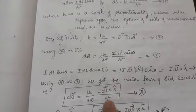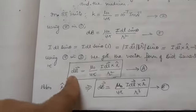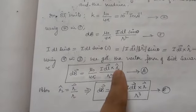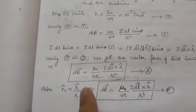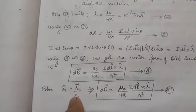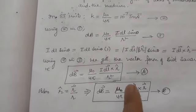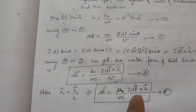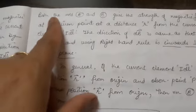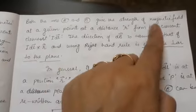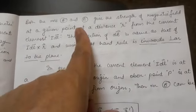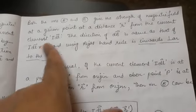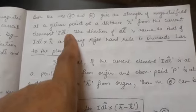Since R-cap is always equal to R vector upon R, I can replace R-cap by R vector upon R to get equation B: IDL vector cross R vector divided by R squared into R, meaning R cubed. Both equations A and B give the strength of the magnetic field at point P at a distance R from the current-carrying element IDL.